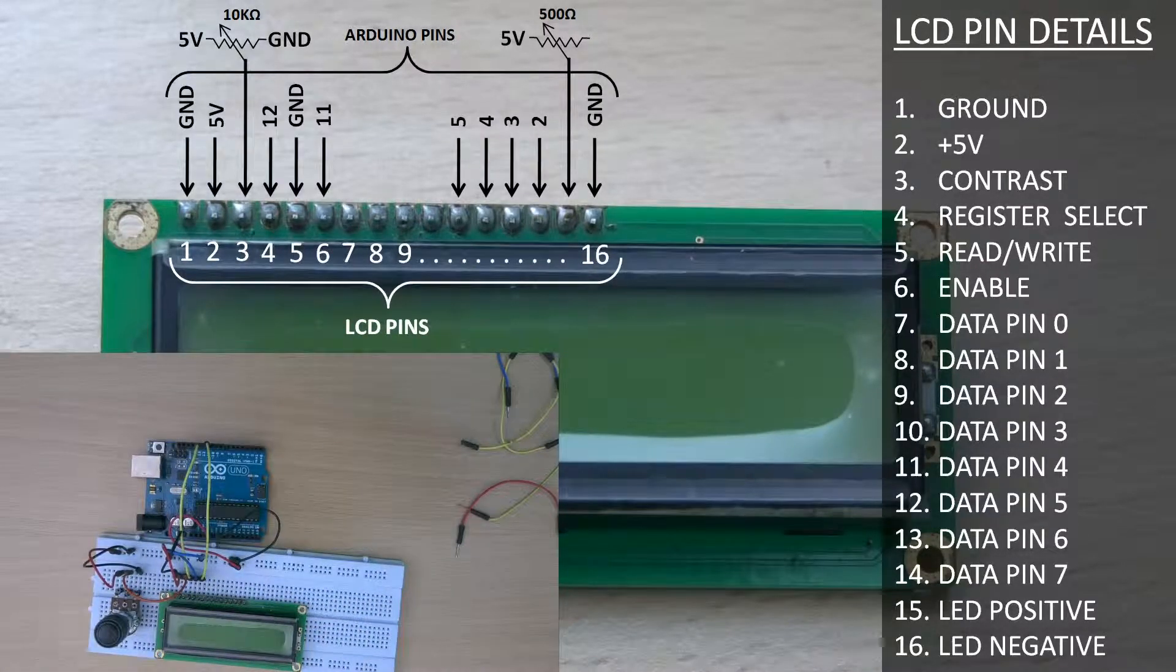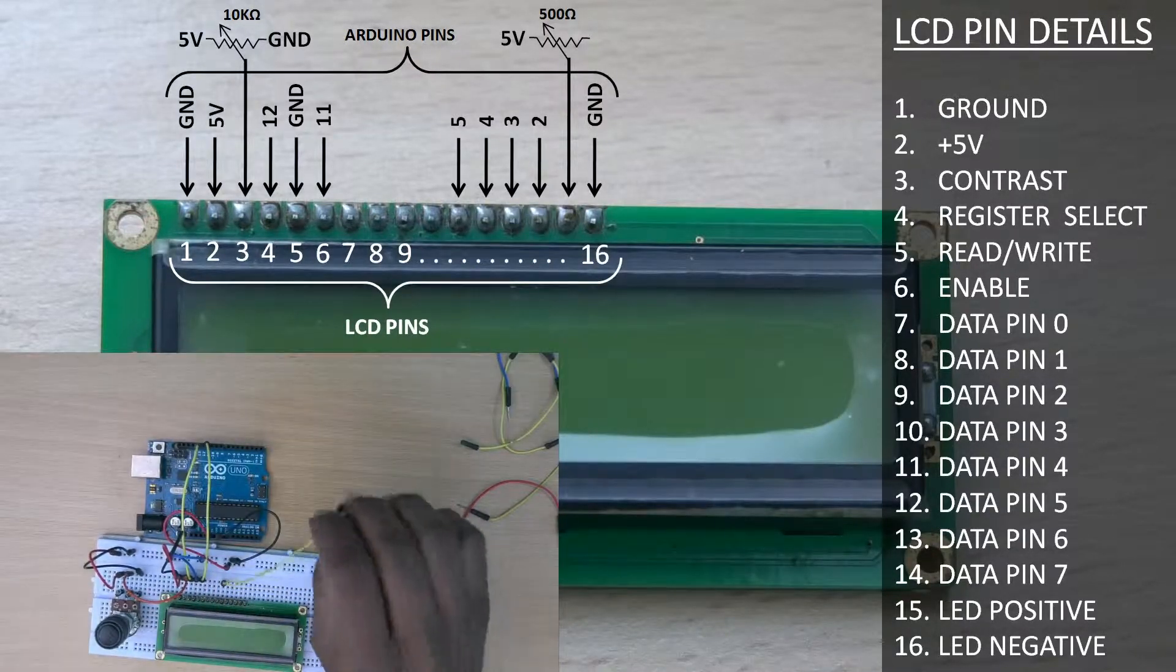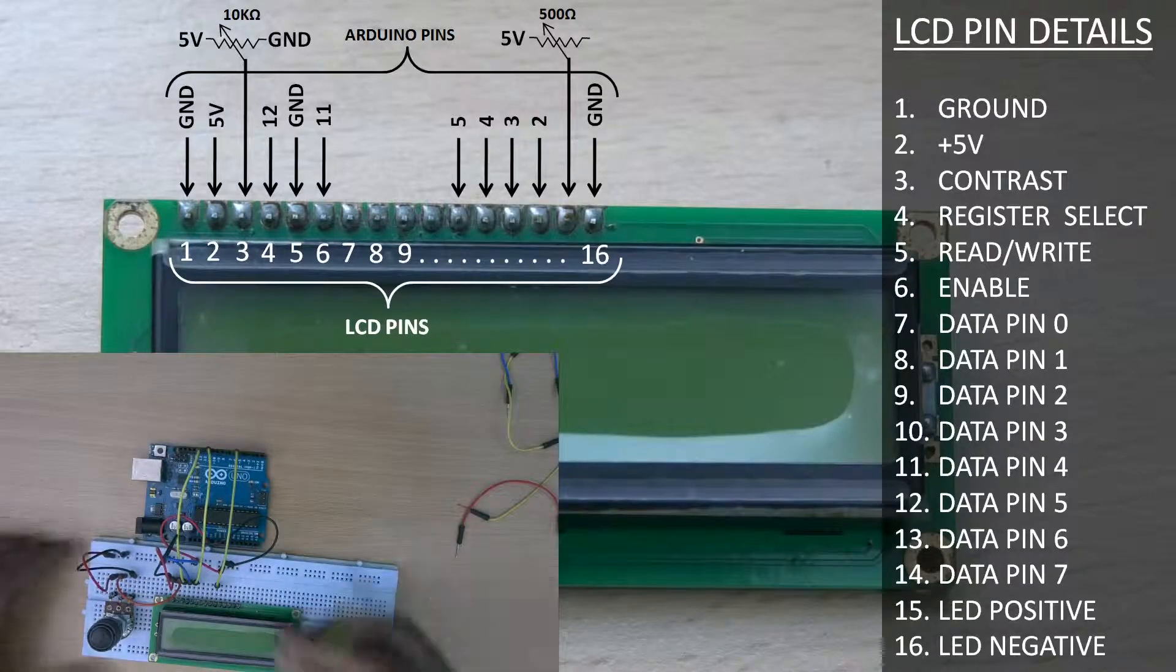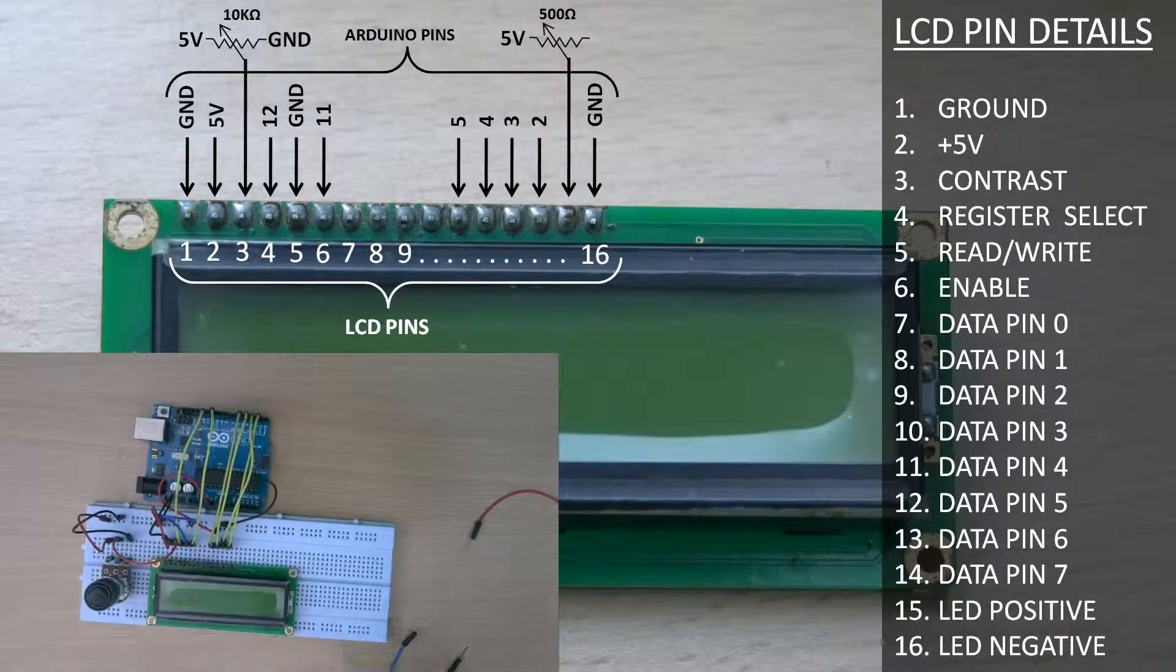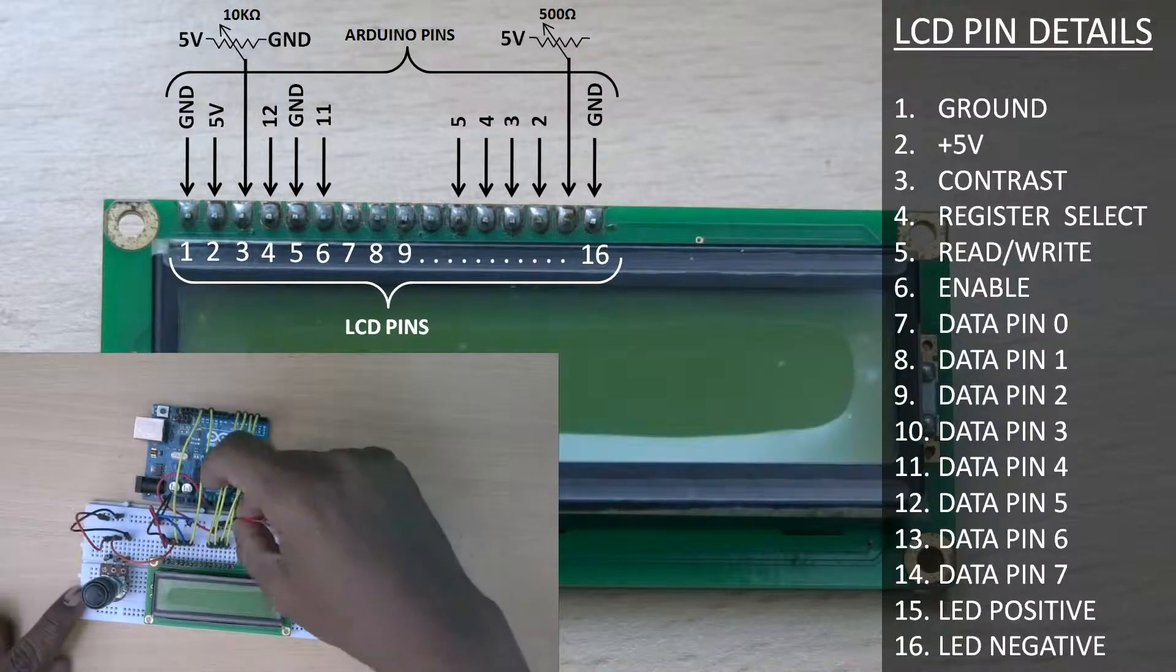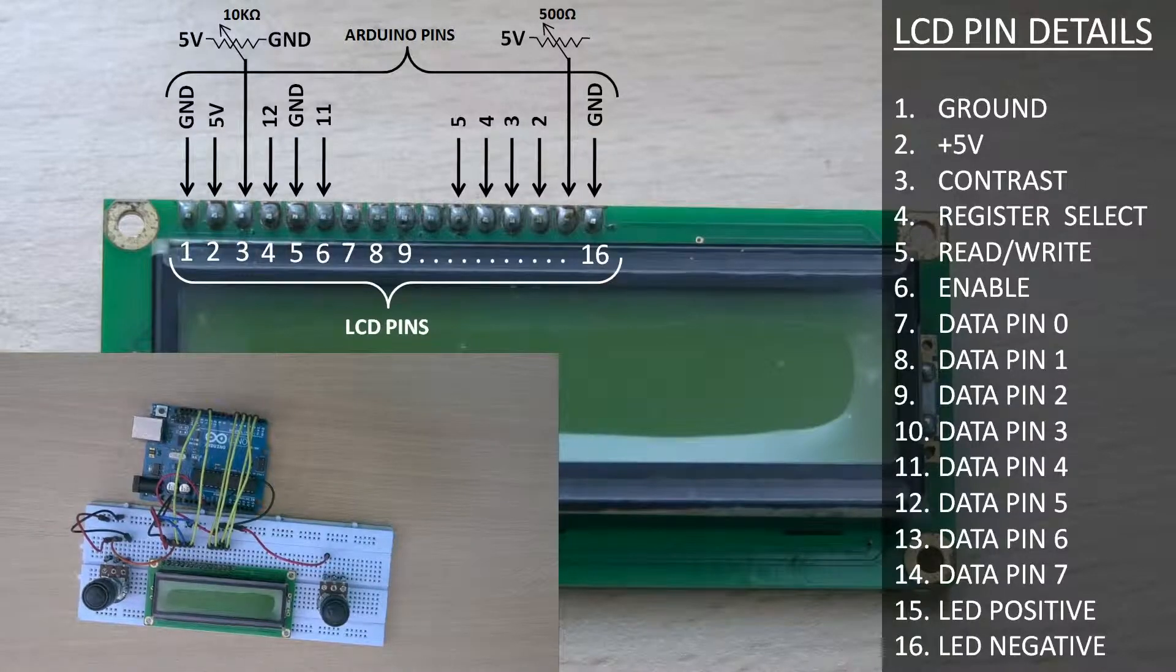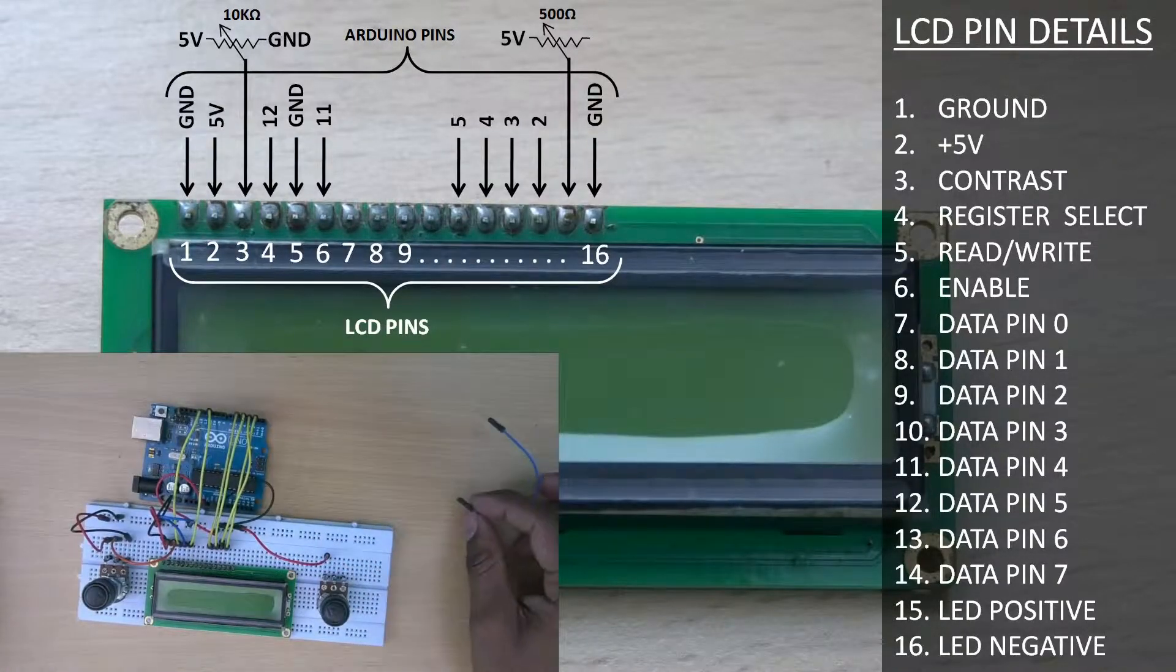LCD pins 7 to 14 are data pins but we have to connect only 4 pins. LCD pin 11 to pin 5 of the Arduino board. LCD pin 12 to pin 4. LCD pin 13 to pin 3. LCD pin 14 to pin 2 of the Arduino board.